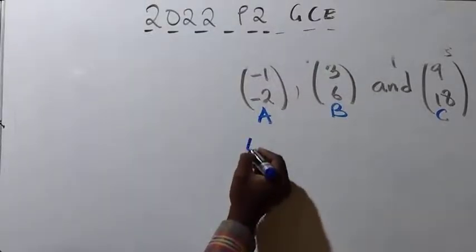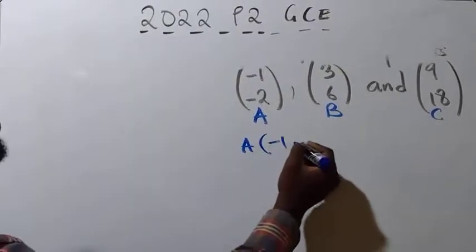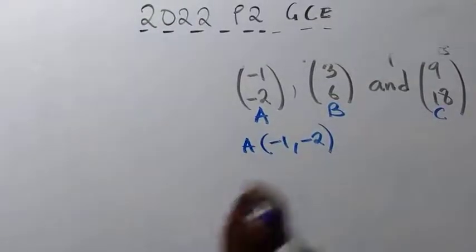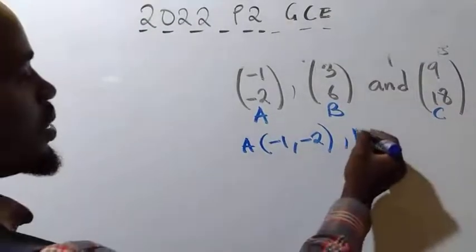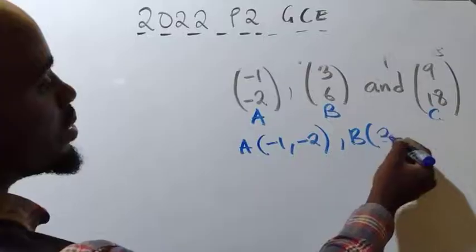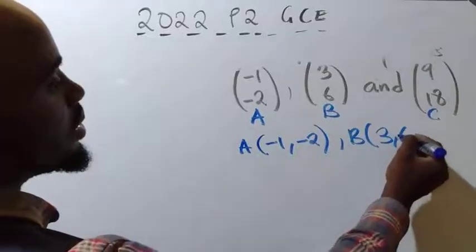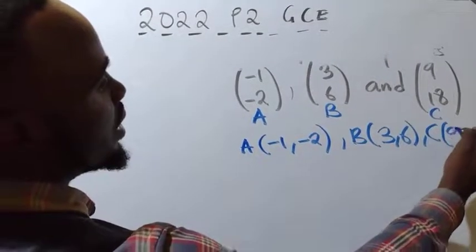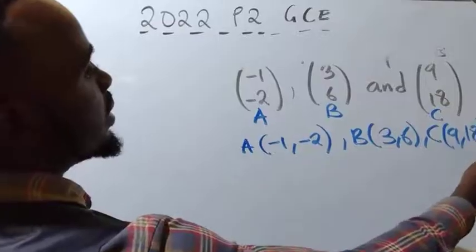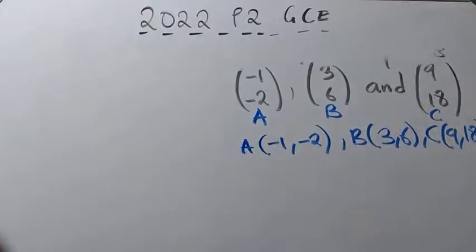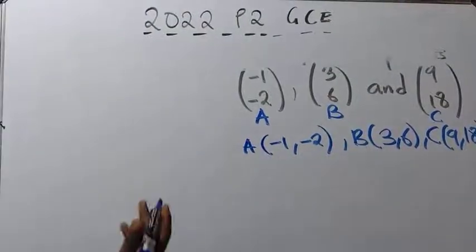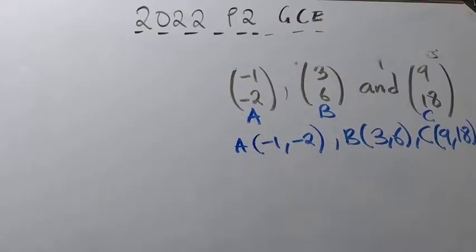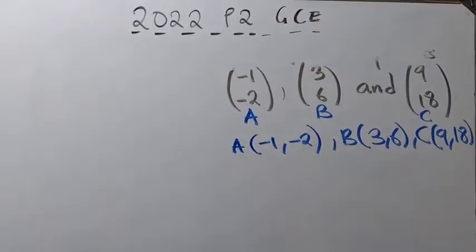These are position vectors, so first change them into coordinate form. Point A will be written as negative 1, negative 2 in coordinate form. Point B will be written as 3, 6. Lastly, point C will be written as 9, 18. Remember, there are many ways you can use to state that points are collinear.